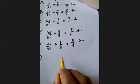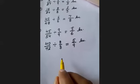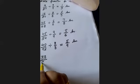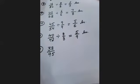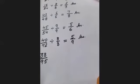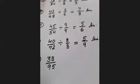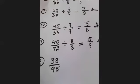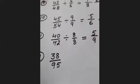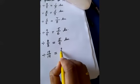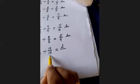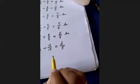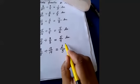Question 12: 38 upon 95. The numerator is 38 and the denominator is 95. Observe this number — both are multiples of 19. So we will divide by 19. 19 times 2 is 38, and 19 times 5 is 95. So your answer is 2 upon 5.